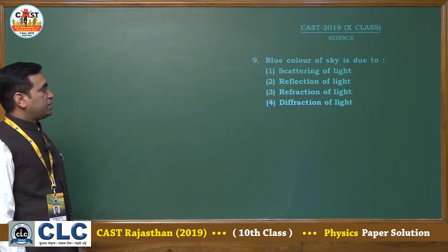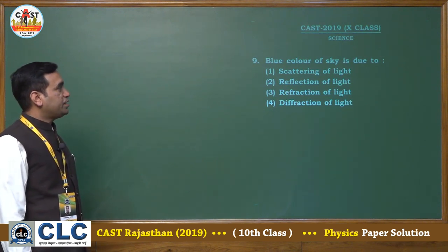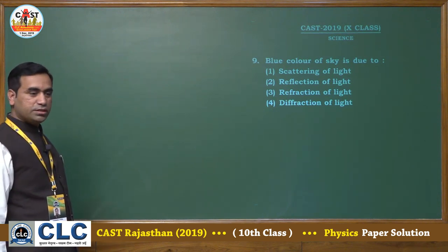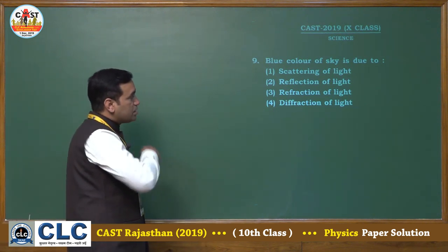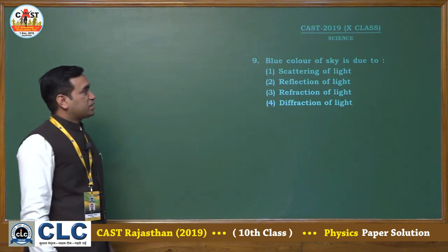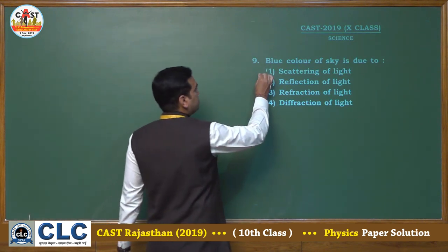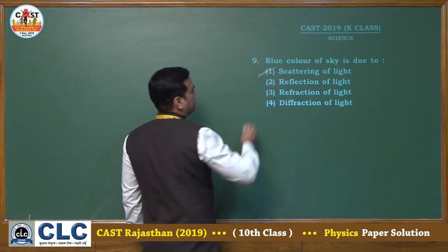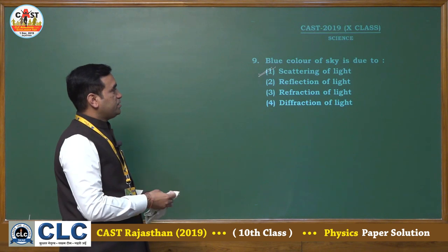The next question: the blue color of sky is due to — this is a theoretical question and we know that the blue color of sky is due to scattering of light. So option 1 is correct.